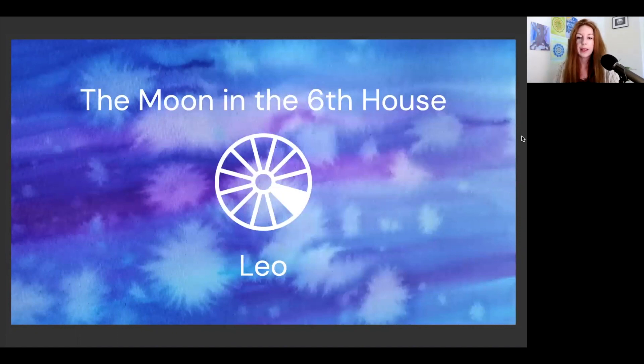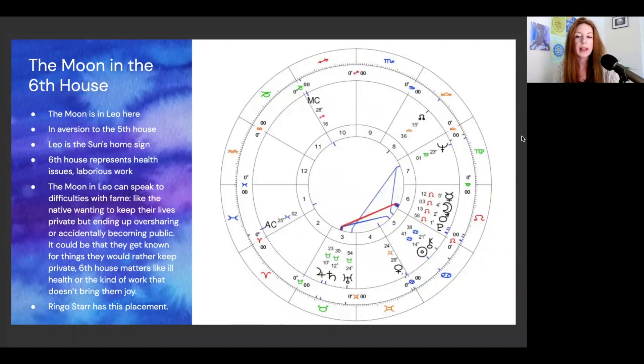Moving on to the sixth house in Leo. The moon here is again in aversion to the fifth house. It's in the sun's domicile, and the sixth house represents health issues, laborious work. It was traditionally called the house of bad fortune and it was the joy of Mars. Interestingly, Mars is in this person's sixth house. The moon in Leo can speak to difficulties with fame, like the native wanting to keep their lives private but ending up oversharing, or accidentally becoming public but not really wanting to. It could be that they get known for things that they would rather keep private. Sixth house matters like ill health or the kind of work that doesn't exactly bring them joy.